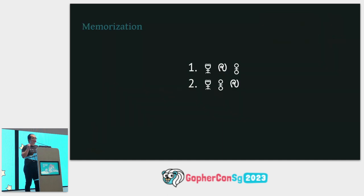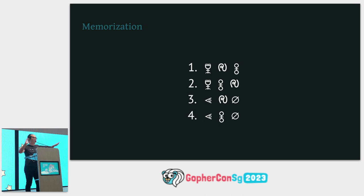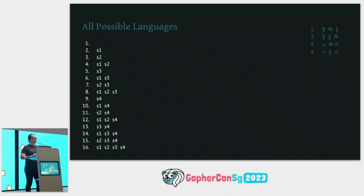Let's go back to the Lian language I created. If there are two valid sentences, and I write two more sentences and label these one to four, we now have four sentences in this world. The entire world only has four sentences and therefore there are 16 possible languages.